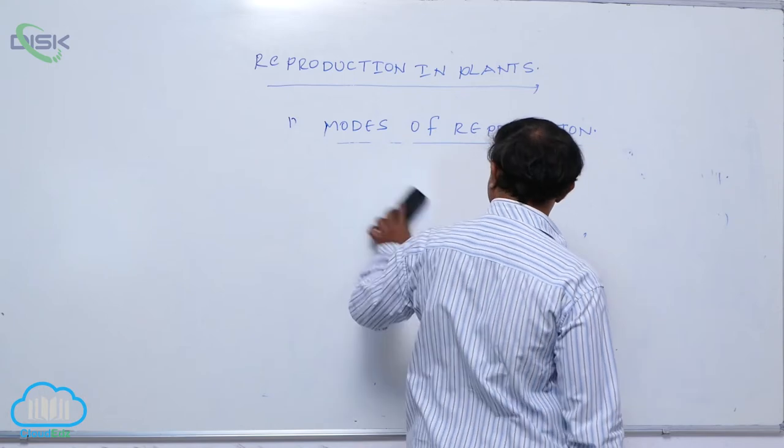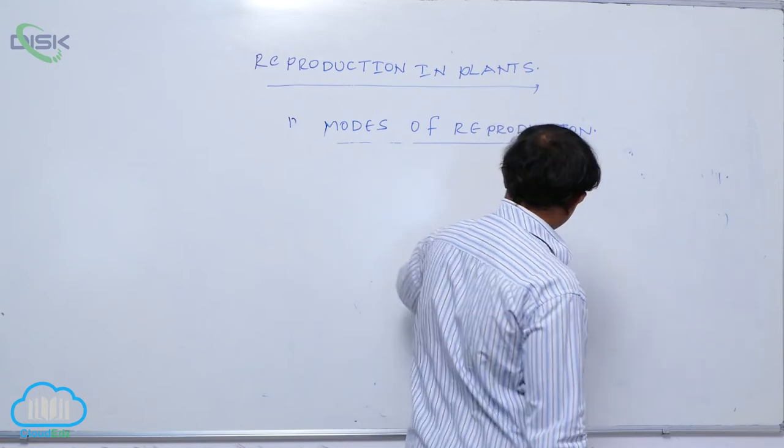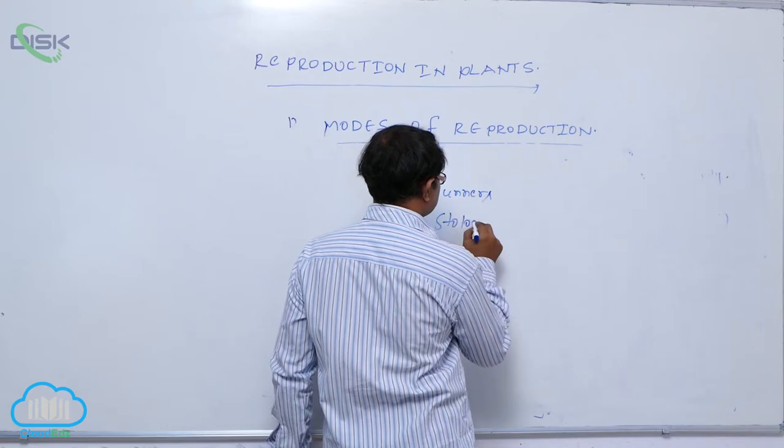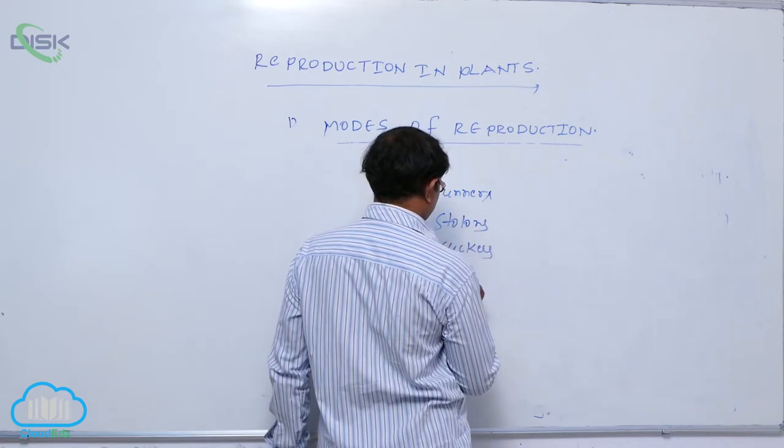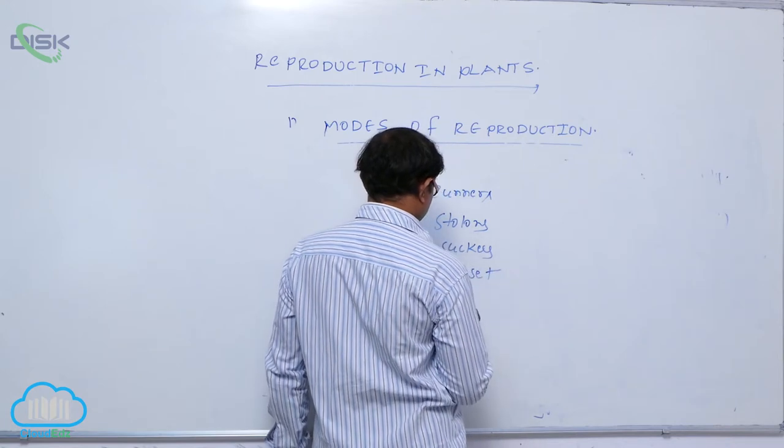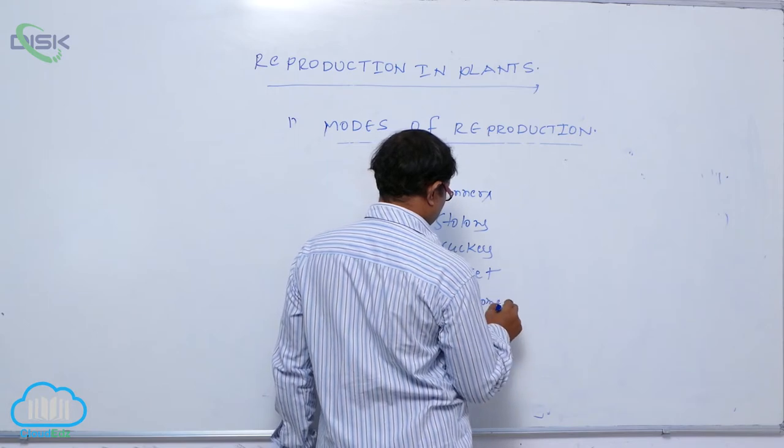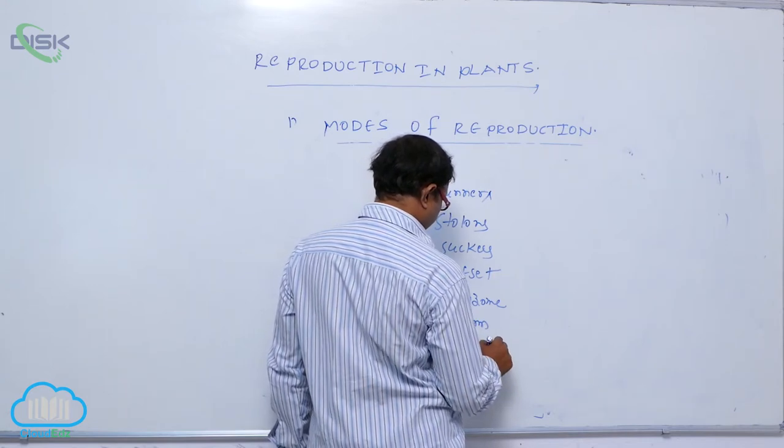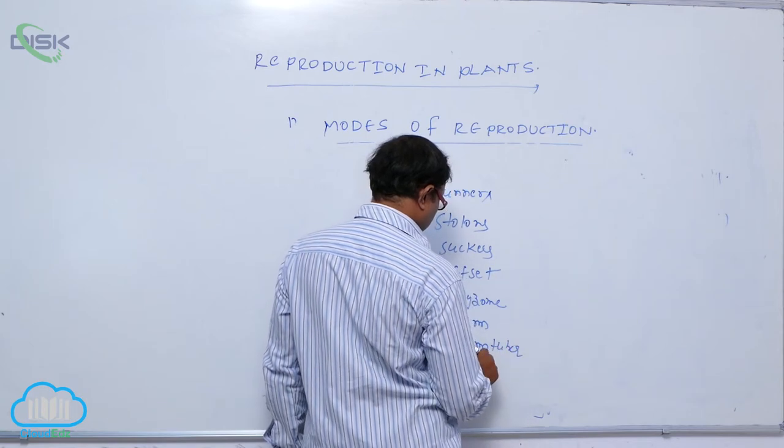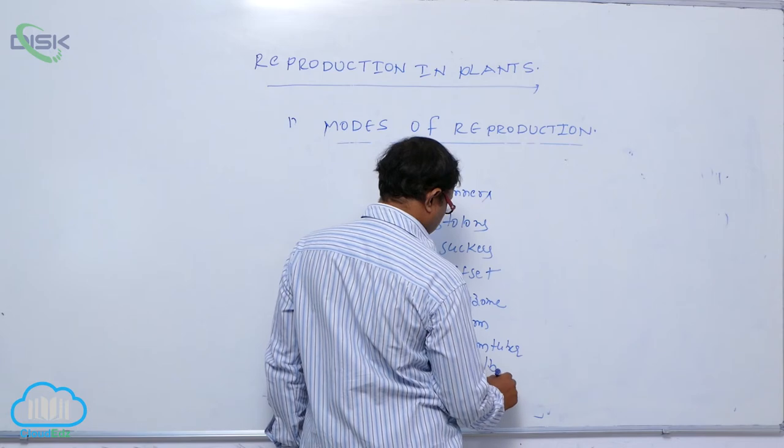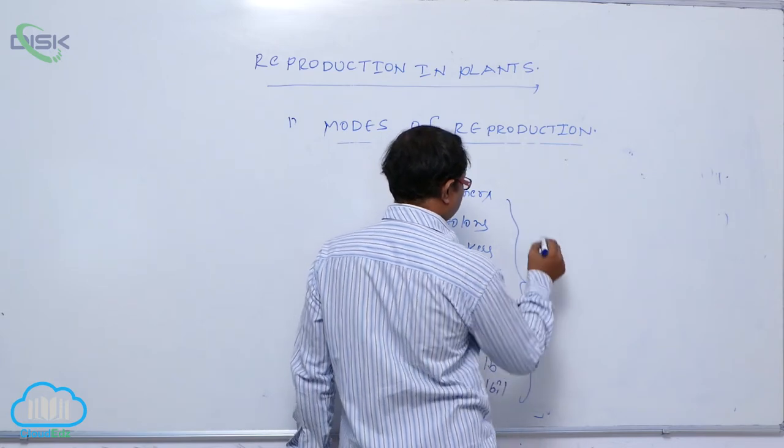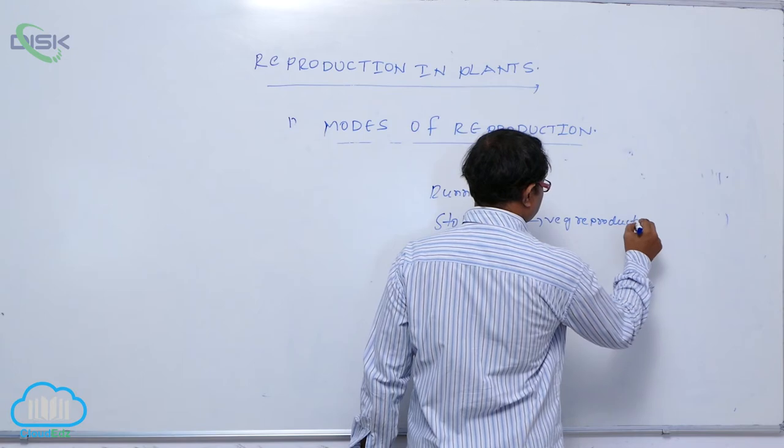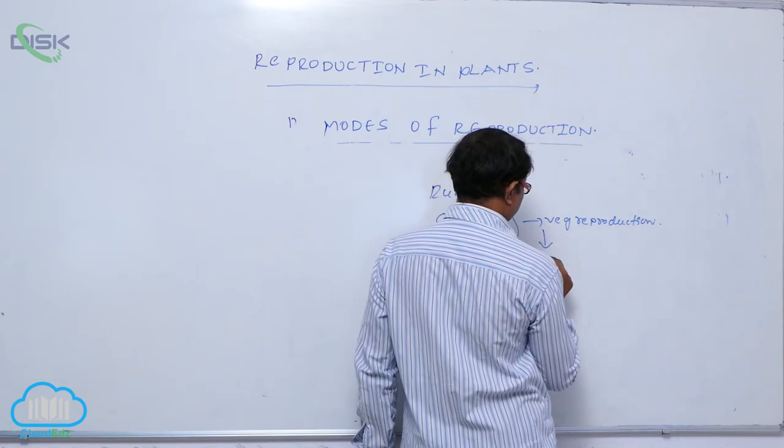In plants, underground stem modifications and sub-aerial stem modifications include runners, stolons, suckers, offset, rhizome, corm, stem tuber, bulb, bulbil. All these are involved in vegetative reproduction, that's why they are known as vegetative propagules.